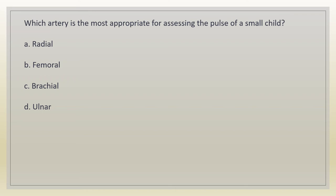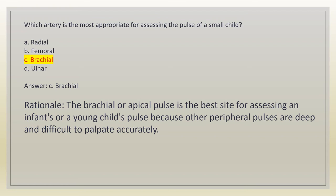Which artery is the most appropriate for assessing the pulse of a small child? A. Radial. B. Femoral. C. Brachial. D. Ulnar. Answer: C. Brachial. Rationale: the brachial or apical pulse is the best site for assessing an infant's or young child's pulse because other peripheral pulses are deep and difficult to palpate accurately.